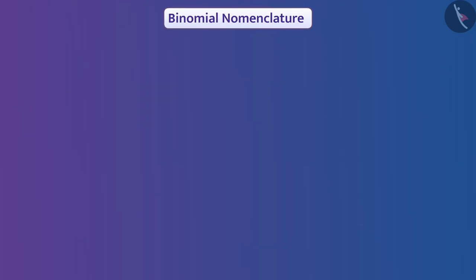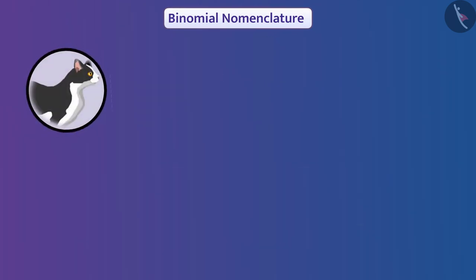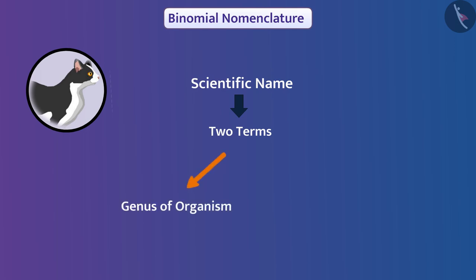In this method, any organism is given a scientific name and is known by that name. This name has two terms, which are words of the Latin language. The first word denotes the genus of that organism and the second word denotes the species of the organism.